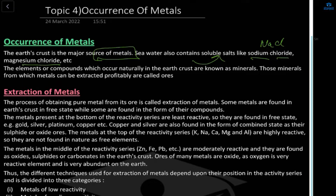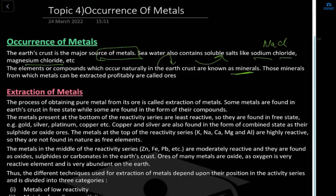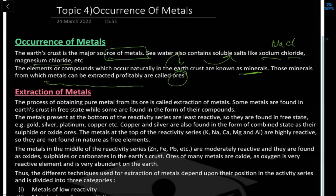The elements or compounds which occur naturally in the earth's crust are known as minerals — formed naturally because of volcanic eruptions and geothermal activity. Those minerals from which metals can be extracted easily or profitably are known as ores.